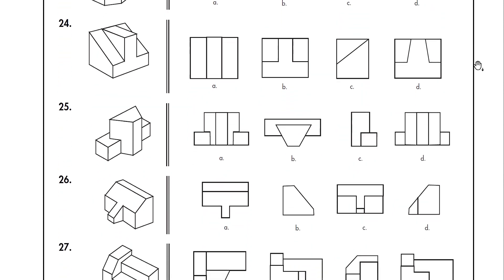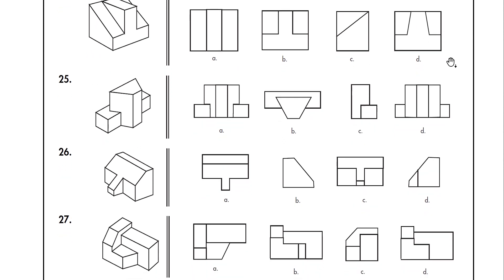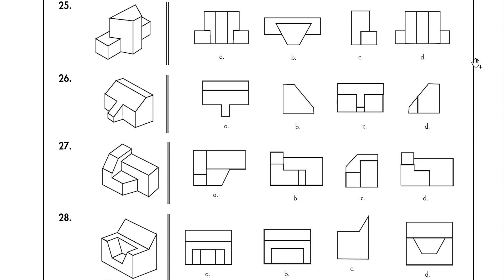Question twenty-four: find the incorrect view. The other options all show 90-degree sharp angles as expected. Option D shows a narrow-to-broad base — a tapered shape — which is not present anywhere in this model. Option D is the odd one out.